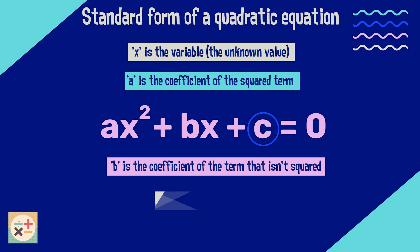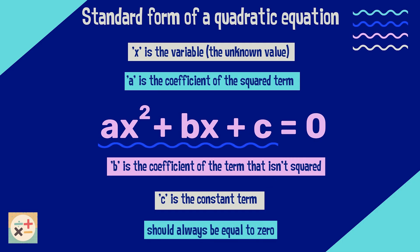And c is the constant, i.e. the number with no variable. The expression on the left hand side of the equation will be equal to zero.